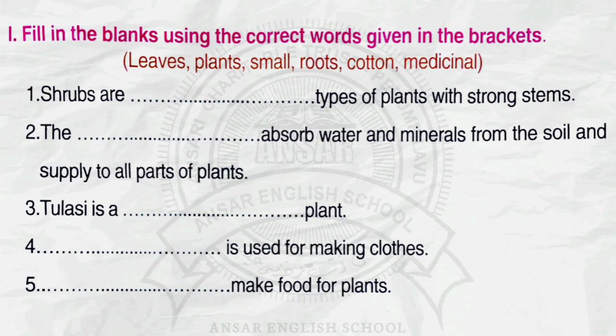Number 1. Shrubs are dash types of plants with strong stems. Answer: small. Number 2. The dash absorbs water and minerals from the soil and supplies to all parts of plants. Answer: roots.